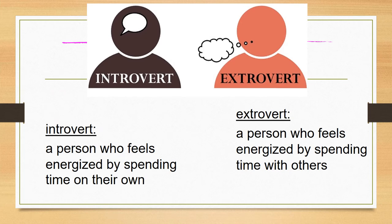Now we're going to go at some of the most basic breakdowns. One of the easiest ones, and something you've probably heard many times before, is the difference between introverts and extroverts. This is one of the key personality type distinctions. An introvert is a person who feels energized by spending time on their own. An extrovert is a person who feels energized by spending time with others — are you more of an internal, quiet person versus more of an outgoing, want-to-talk-to-people type of person?